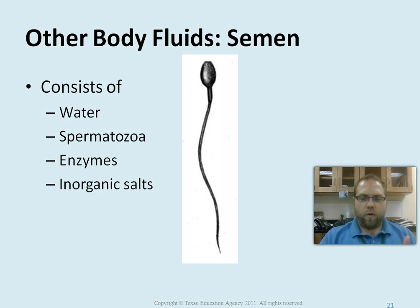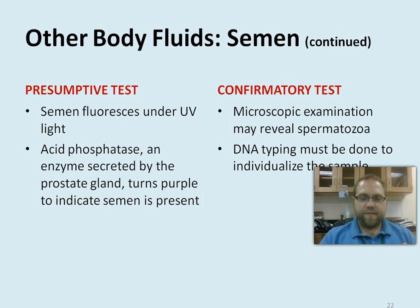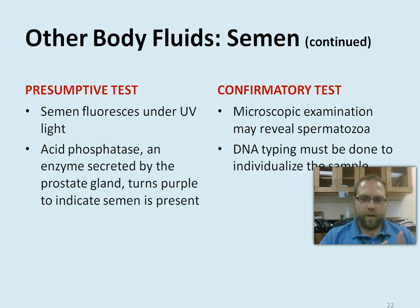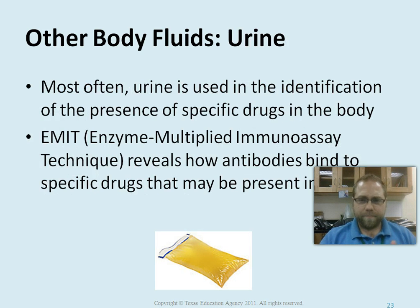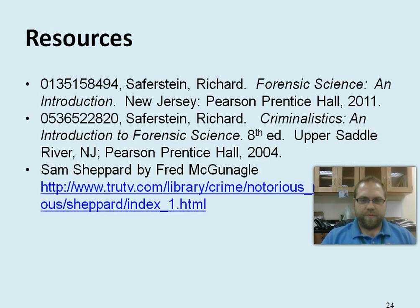Semen consists of water, spermatozoa, enzymes, and organic salts. The presumptive test is that it will fluoresce under UV light; there's also acid phosphatase in it that causes a purple color reaction. The confirmatory test is microscopic examination to determine if you see spermatozoa, along with DNA typing. Finally, urine is used to determine if there are drugs found in the body. There's the EMIT test, which can help you determine whether very specific drugs are present — and that's what you need to know.